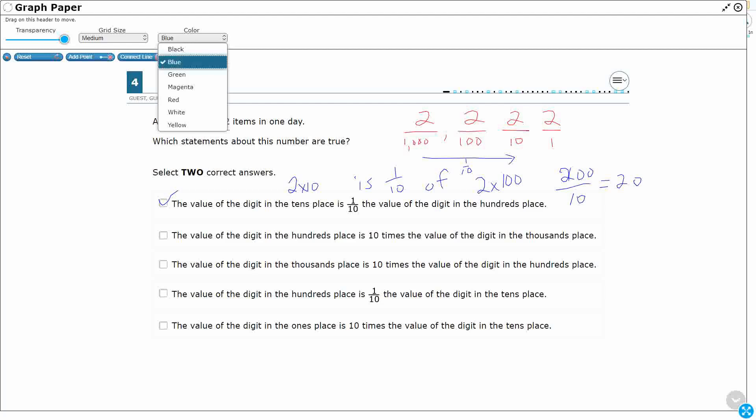So let's check B, or the second option. We only need one more. The value of the digits in the 100s place, that's 2 times 100, is 10 times the value of the 1000s place. Whoa, nope. Look, in the 1000s place, I've got 2 times 1000. That's actually incorrect.